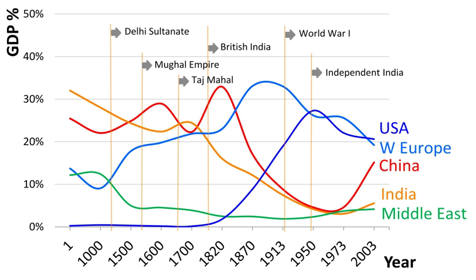The economic history of the world is a record of the economic activities, i.e. the production, distribution and consumption of goods and services of all humans, spanning both recorded history and evidenced prehistory.